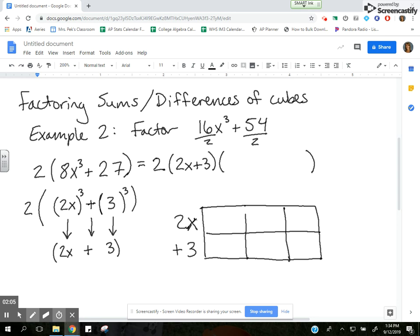Inside the box, I know I need to end up with 8x³ and a positive 27. Now I can work this box and ask myself: what times 2x is 8x³? It's going to be 4x².